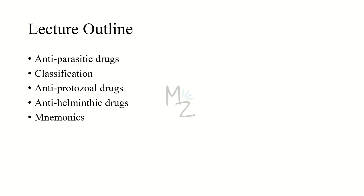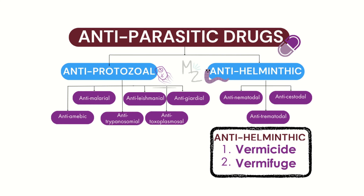Let's talk about the lecture outline. First we'll cover the classification of anti-parasitic drugs, then anti-protozoal and anti-helminthic drugs, and at the end some mnemonics to help memorize these drugs. Anti-parasitic drugs are classified into anti-protozoal and anti-helminthic based on the type of organism. Anti-protozoal drugs are further classified into anti-amoebic, anti-malarial, anti-trypanosomal, anti-leishmanial, anti-toxoplasmosal, and anti-giardial.